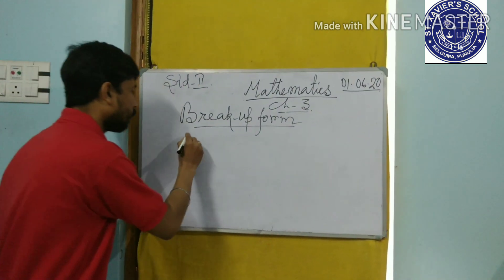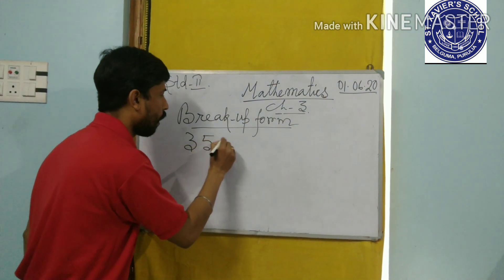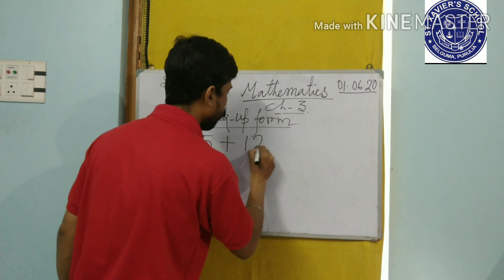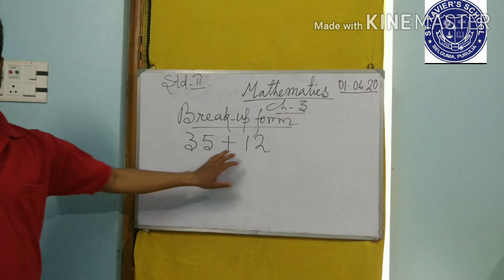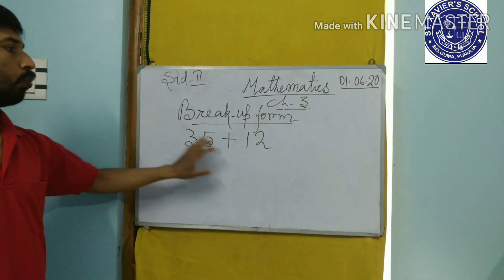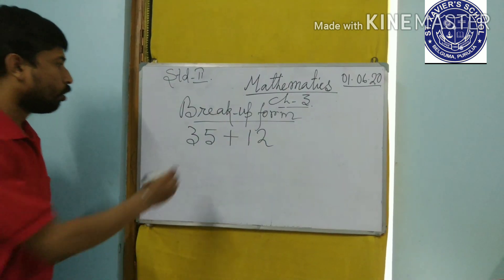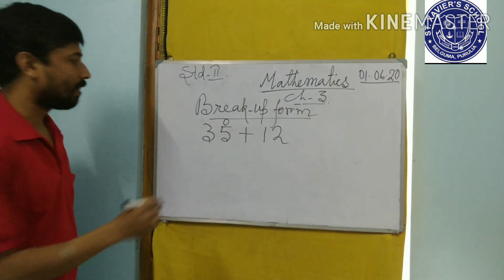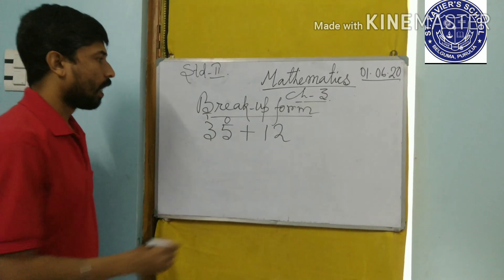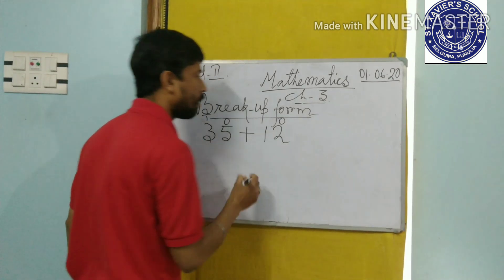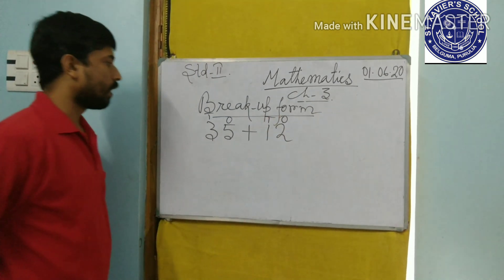Let's take one example. 35 plus 12. How to add through break up form? Now, as you know, this comes under 1's place and this comes under 10's place. And on this side, 2 comes under 1's place and 1 comes under 10's place.